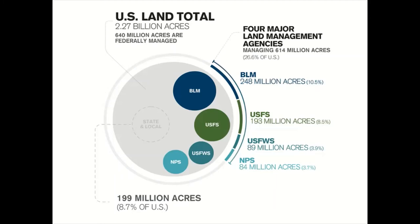Here are some numbers: the U.S. federal government manages 640 million acres as part of U.S. lands. There are four major agencies that do most of the management. The biggest is the BLM — Bureau of Land Management. Then we have the USFS, United States Forest Service. Then USFWS, United States Fish and Wildlife Service. And finally the NPS, the National Park Service, which manages our national parks, monuments, and so forth.